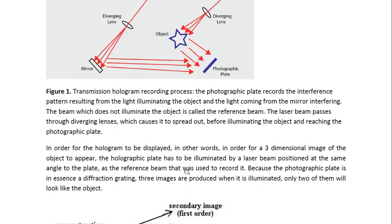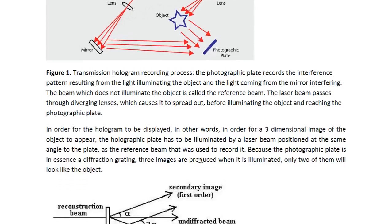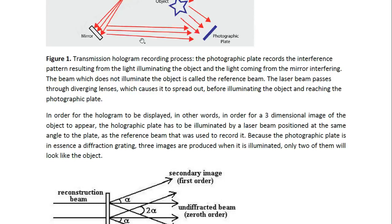Now in order for the hologram to be displayed, in other words, in order for the three-dimensional image of the object to appear, the holographic plate has to be illuminated by a laser beam positioned at the same angle to the plate as the reference beam that was used to record it. And in this case this is the reference beam. It's the part of the beam that did not actually illuminate the object. It just came straight through and then it eventually reaches the photographic plate. And so that reference beam is what's used to animate the hologram.